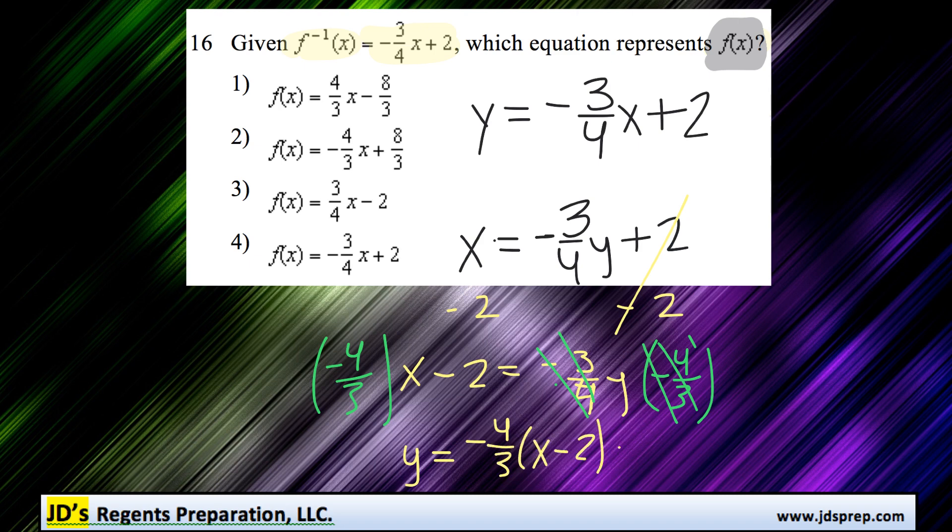We can think of this as negative 4 multiplied by x minus 2, all over 3. At this point, it's helpful to distribute and get rid of the brackets. This becomes negative 4x plus 8, all over 3.